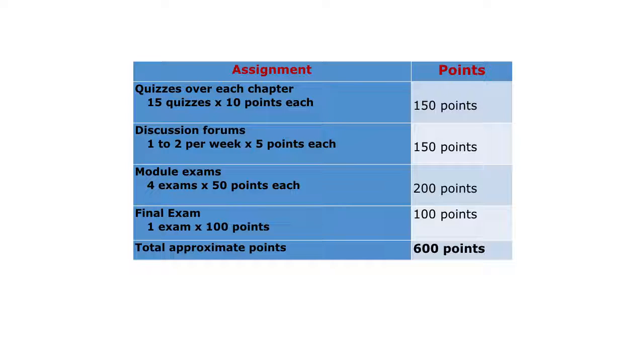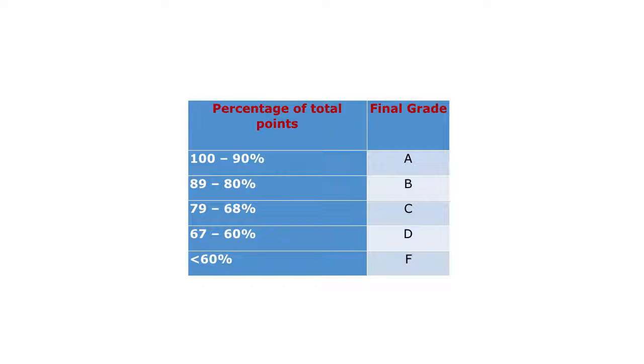So your grade will be made up then of those exams, the quizzes, and the discussion forums. To get an A in the course, you'll have to earn 90% or higher of the available points. A B will be between, you'll have to earn between 80 and 89%, a C between 68 and 79%, and a D would be between 60 and 67%.